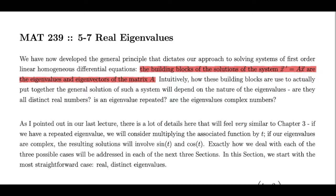Just to foreshadow what we'll see over the next couple sections: if we have a repeated eigenvalue, then we will multiply the associated solution by t. In the case of a repeated eigenvalue, it's a little more subtle than simply multiplying directly by t. But this method of multiplying by t when one of the roots is repeated feels very natural to us now, having done that repeatedly throughout Chapter 3. Similarly, in Chapter 3, if we had complex solutions to our characteristic polynomial, we expected the resulting solutions to involve sine and cosine. The same will be true here, and we'll spend one section each on these three specific cases.